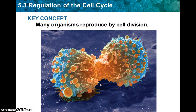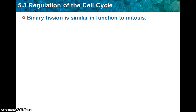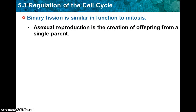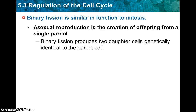Now for 5.4, we're going to talk about cell division more, as well as asexual reproduction and binary fission. Binary fission is very similar to mitosis but takes place in prokaryotic cells — bacteria. Asexual reproduction is the creation of offspring from a single parent, whereas sexual reproduction involves two parents. Binary fission produces two daughter cells genetically identical to the parent, which is how it's similar to mitosis.